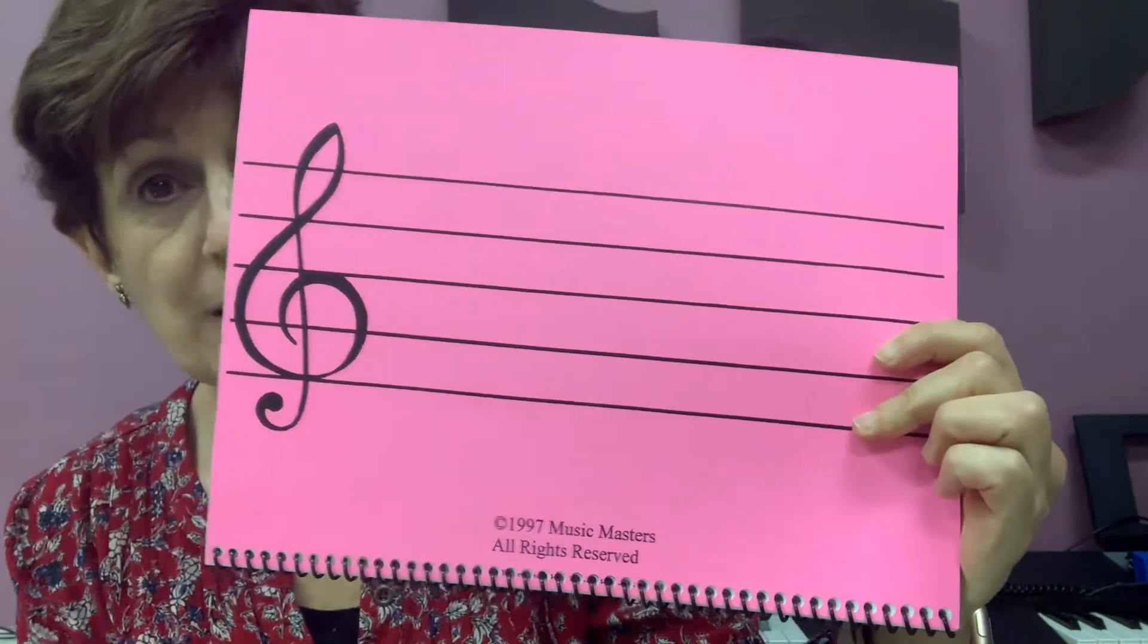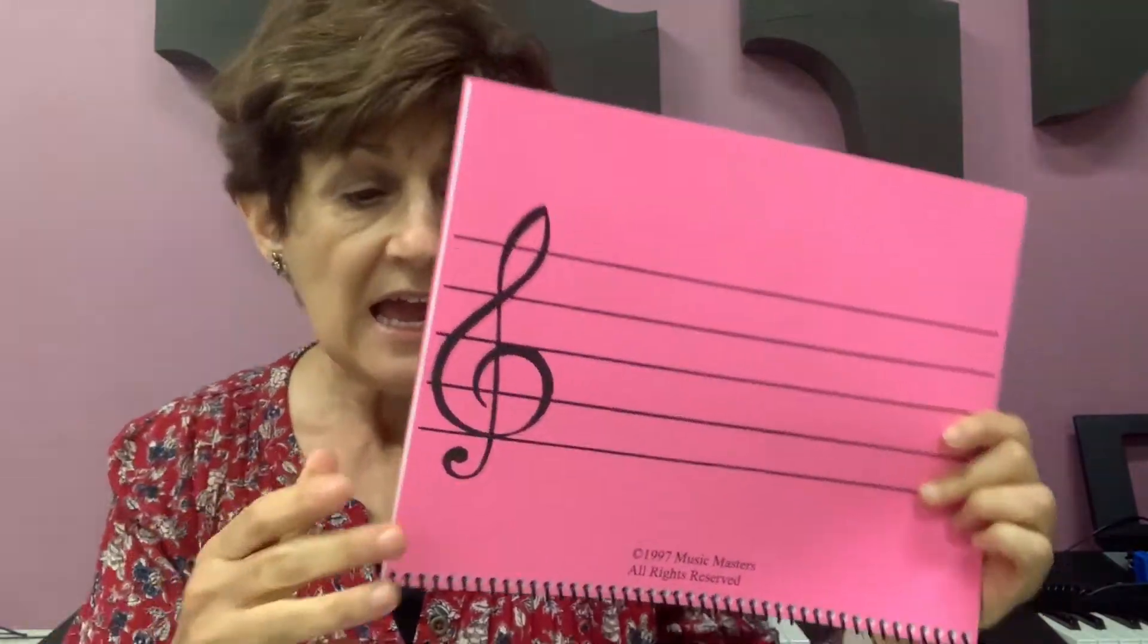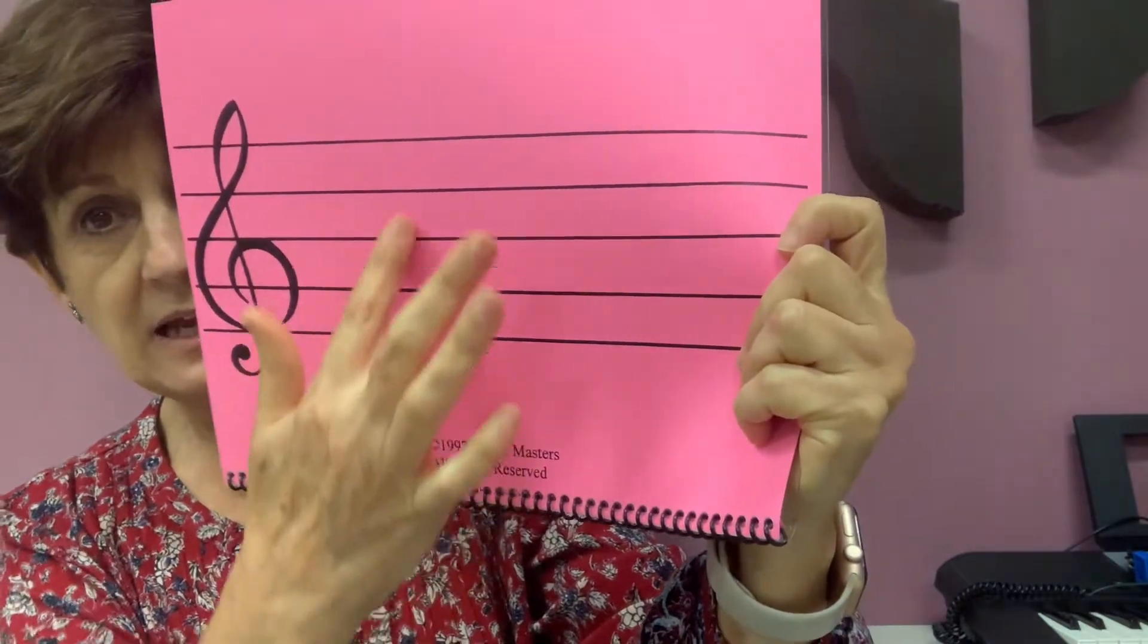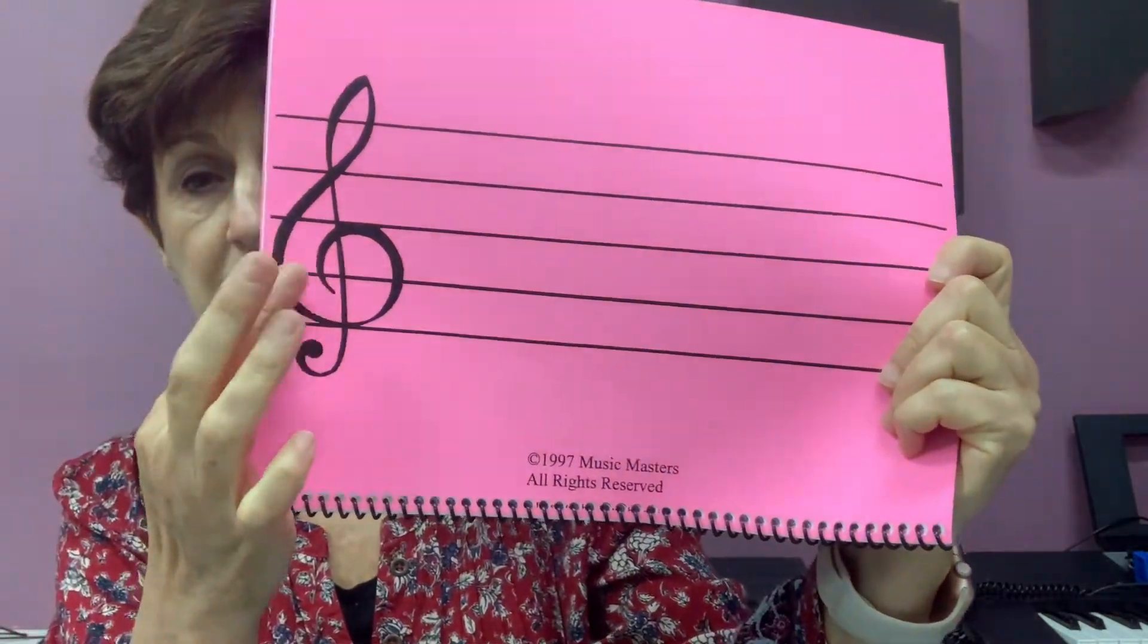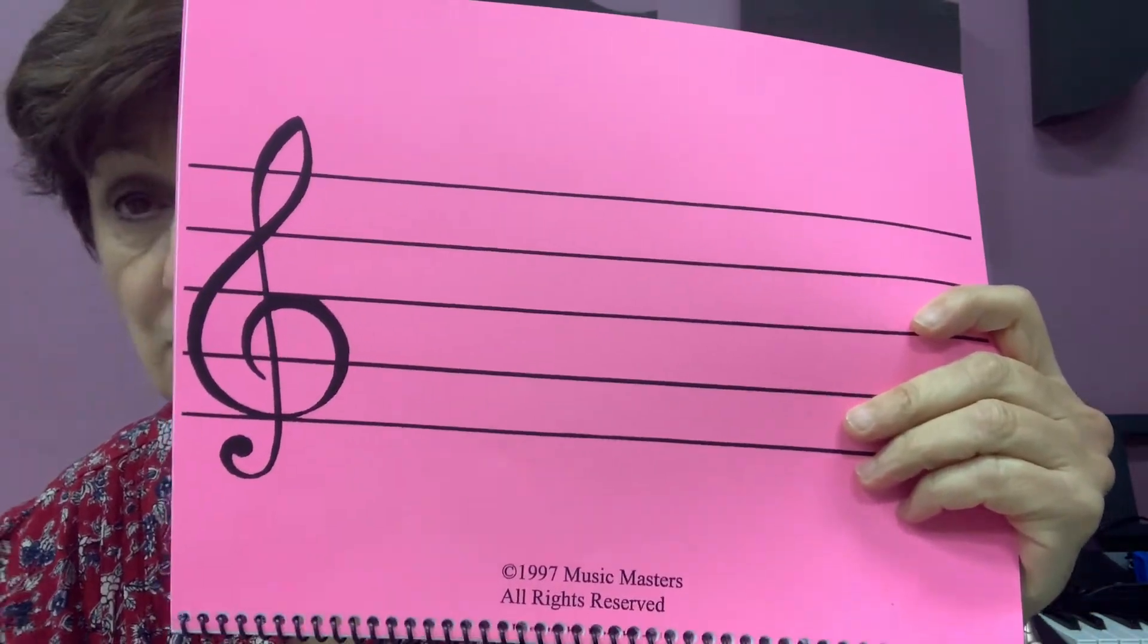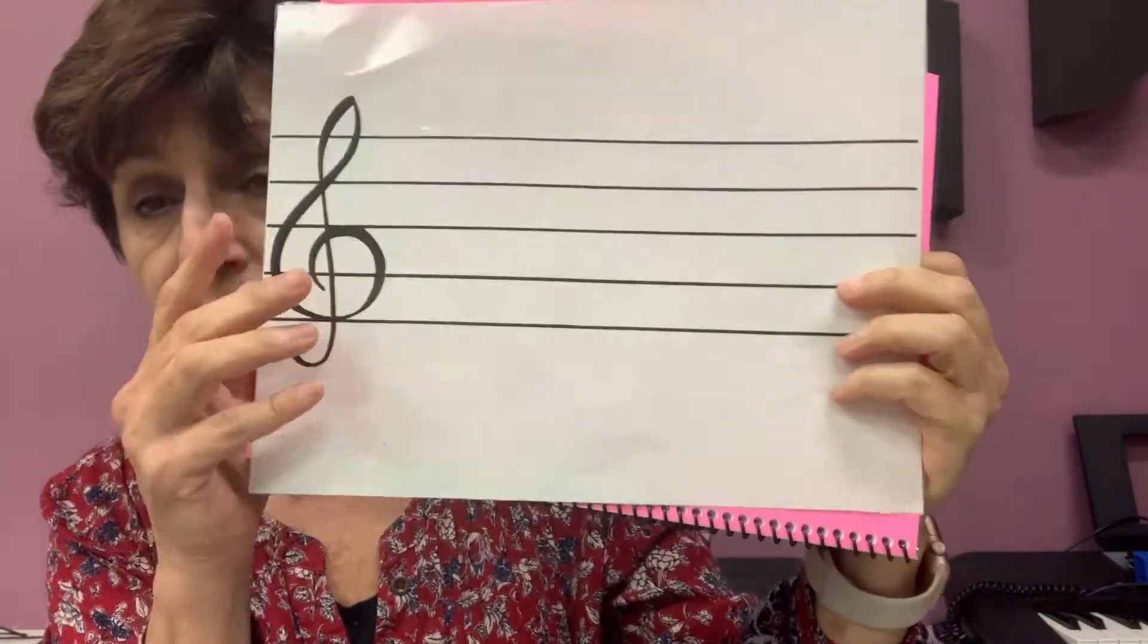I'm going to show you how you can be a composer and you can make your own songs. See, this is my book. On the back of the book, there's a big staff with a big, big treble clef. So I'm going to make a copy. You can ask your mommy to make a copy of this page. And then you end up with something like this.